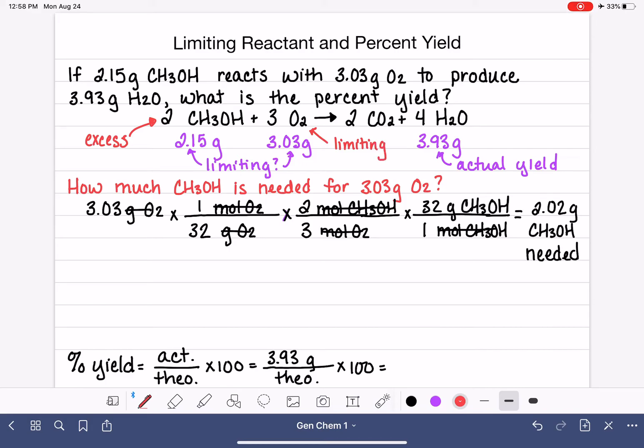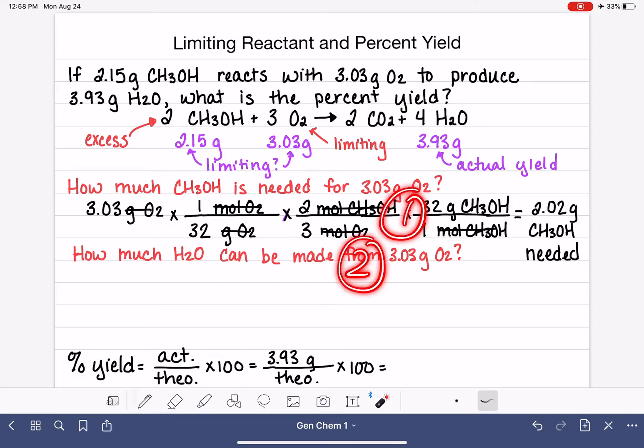So now that we have that information, we know what our limiting reagent is, our next step is to do a calculation where we determine how much product we can make, how much H2O can be made from that amount, 3.03 grams of O2. This is really a two-step problem, maybe three steps if you consider this to be a step. So now that we've determined that we only need 2.02 grams of methanol, and we have 2.15, which means we have plenty, we've determined that our limiting reagent is the 3.03 grams of O2.